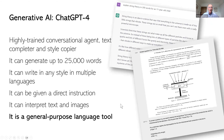The first thing I want to do is give an overview of where we are, particularly around ChatGPT-4, which is the best known and still the larger scale model. ChatGPT version 4 is a highly trained conversational agent, text completer, and style copier.